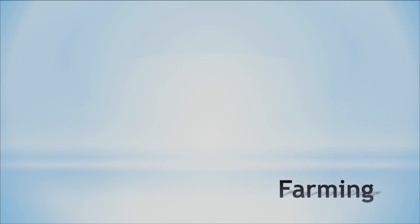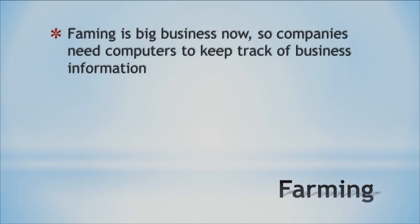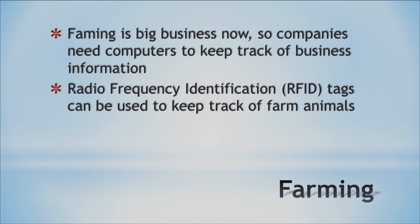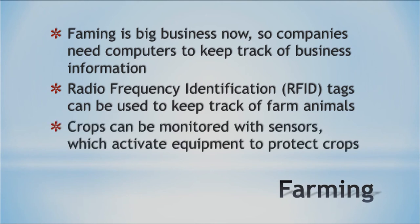Then there's farming. You might think, farming — computers? But it's big business now. Companies need computers to keep track of business information, see what sells and what doesn't, and make decisions about what to grow more or less of. Radio frequency ID tags can be placed inside animals to track their location — even the Humane Society uses them to track adopted animals. And there are sensors for crops as well.